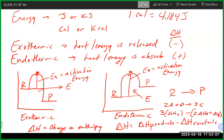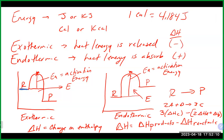On the energy diagram, delta H is the difference between the energy of the reactants and the energy of the products. Because the products are lower in energy than the reactants, you have a smaller number minus a larger number, giving a negative delta H — exothermic. For endothermic, products are higher in energy than reactants, giving a larger number minus a smaller number — a positive delta H.